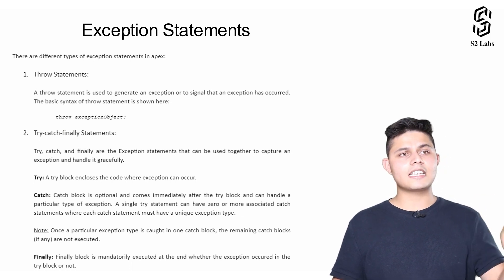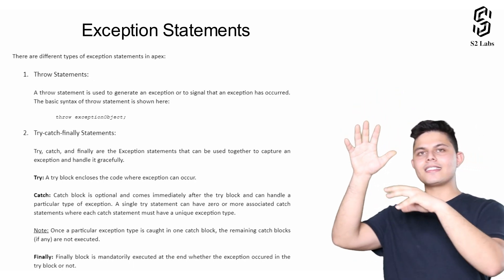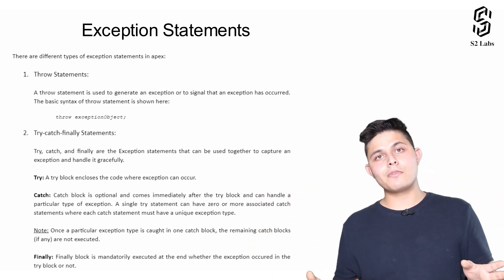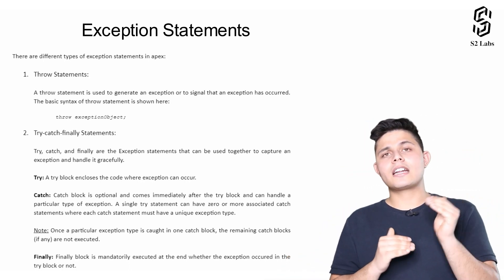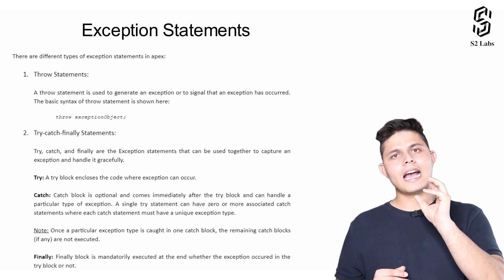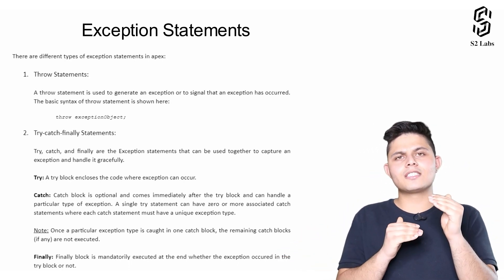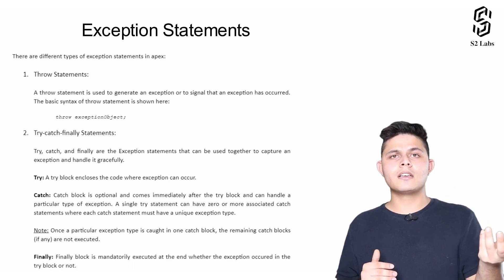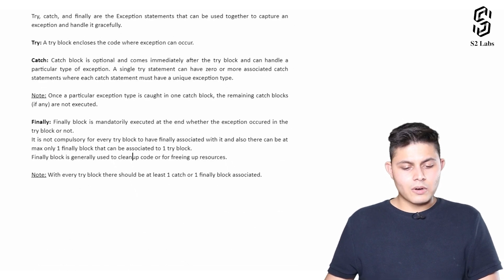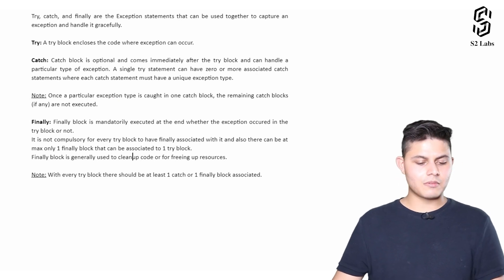Whenever an exception is thrown, only one catch block will catch it. Just like throwing a ball — only a single person can catch it; it's not possible for five people to catch the same ball at the same time. Similarly, whichever exception is thrown, only one catch block will execute its code, and the rest of the catch blocks will not execute. The note here states: once a particular exception type is caught in one catch block, the remaining catch blocks, if any, are not executed.